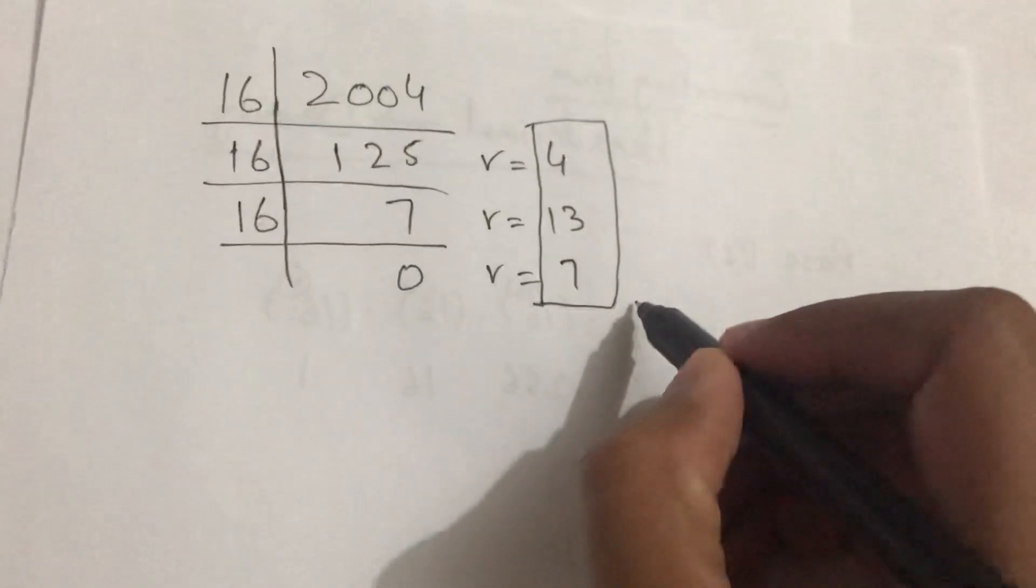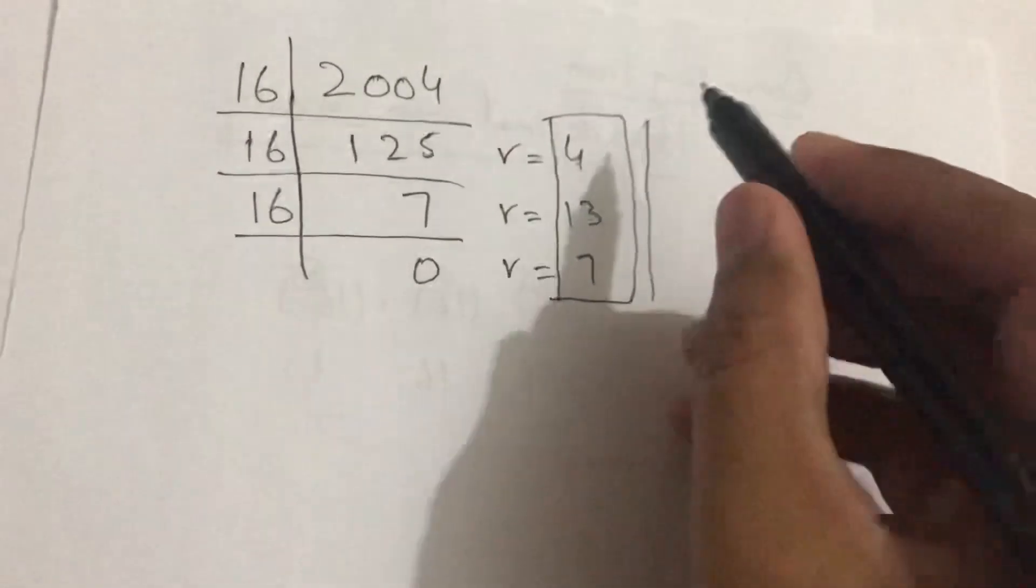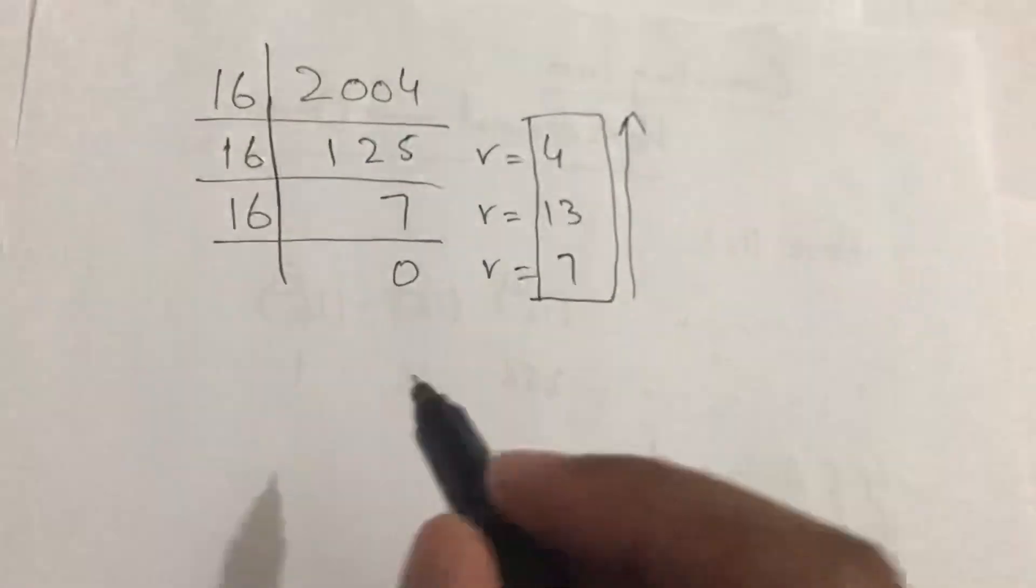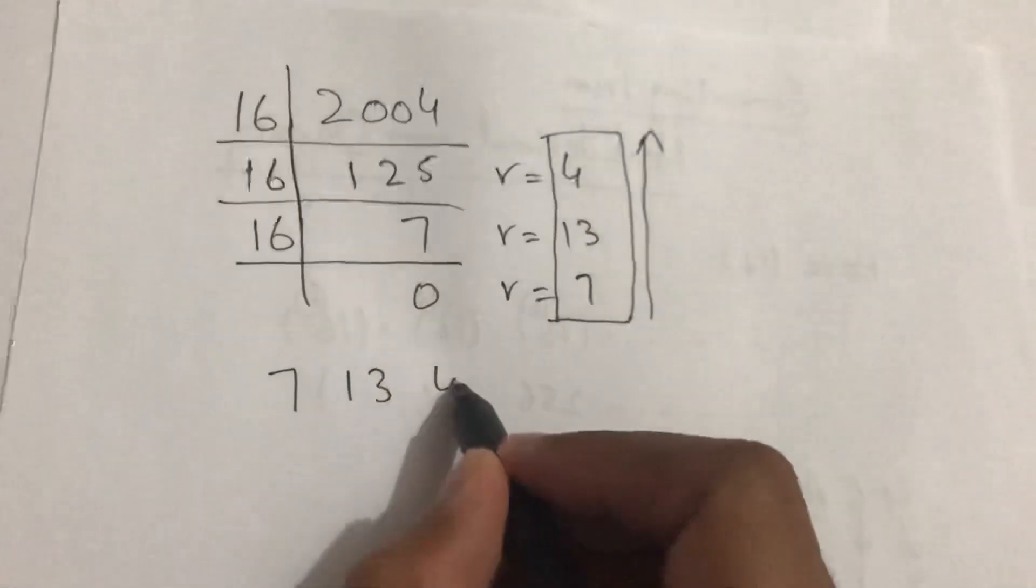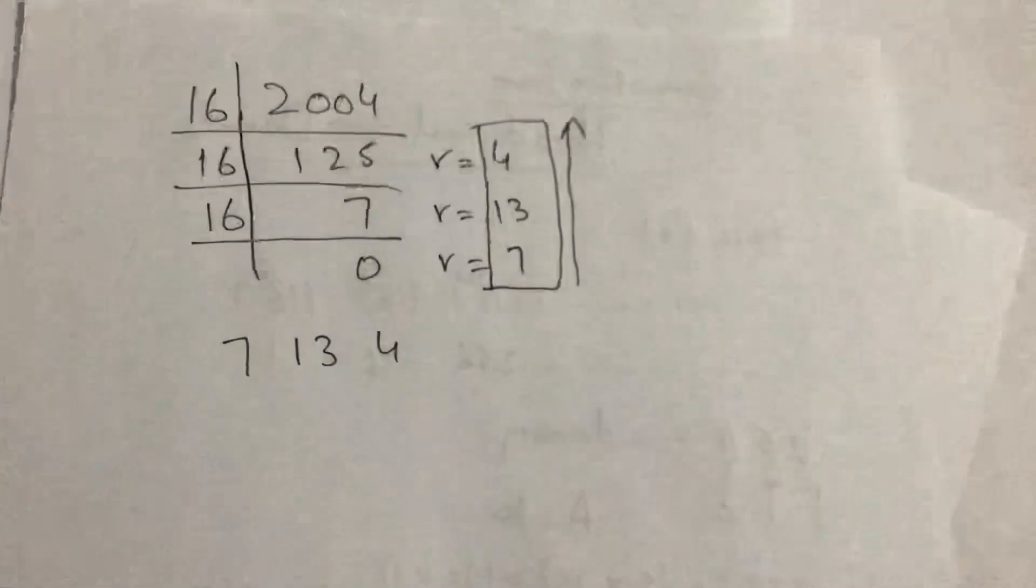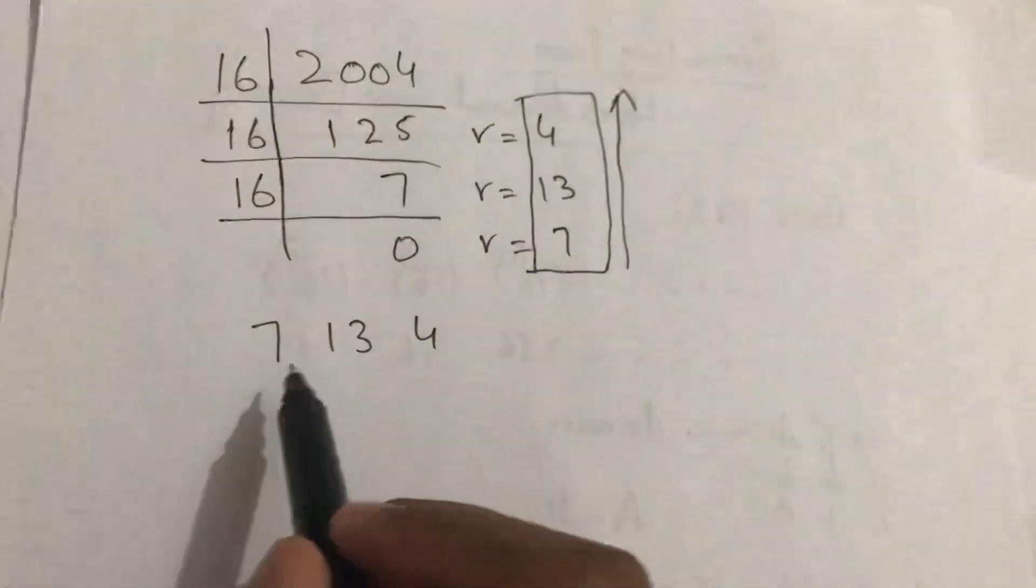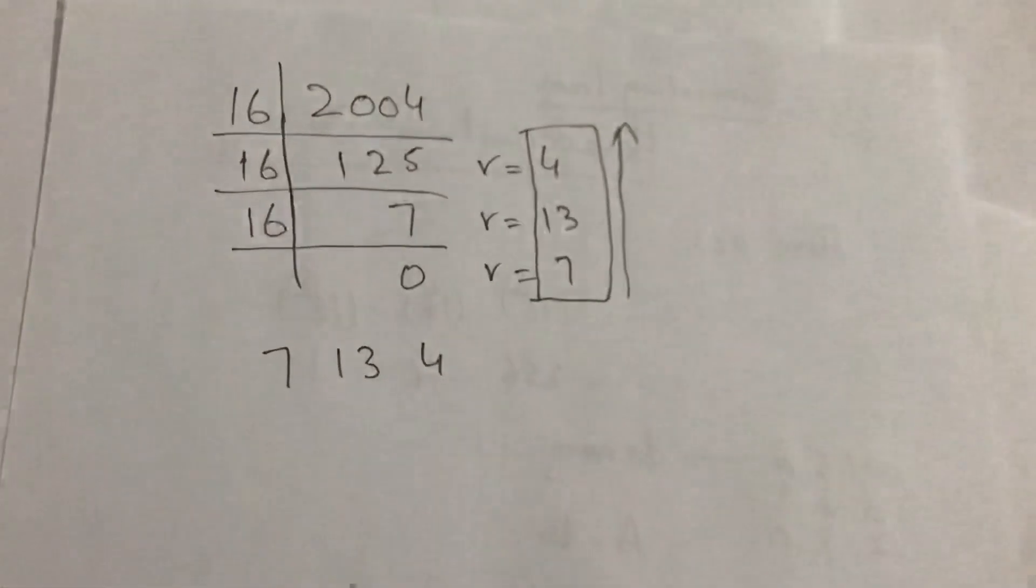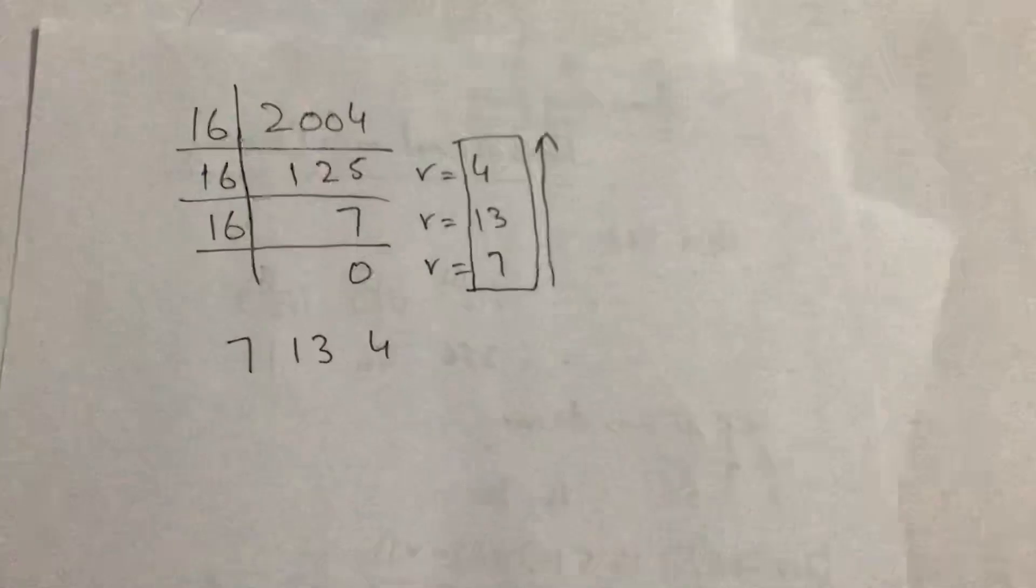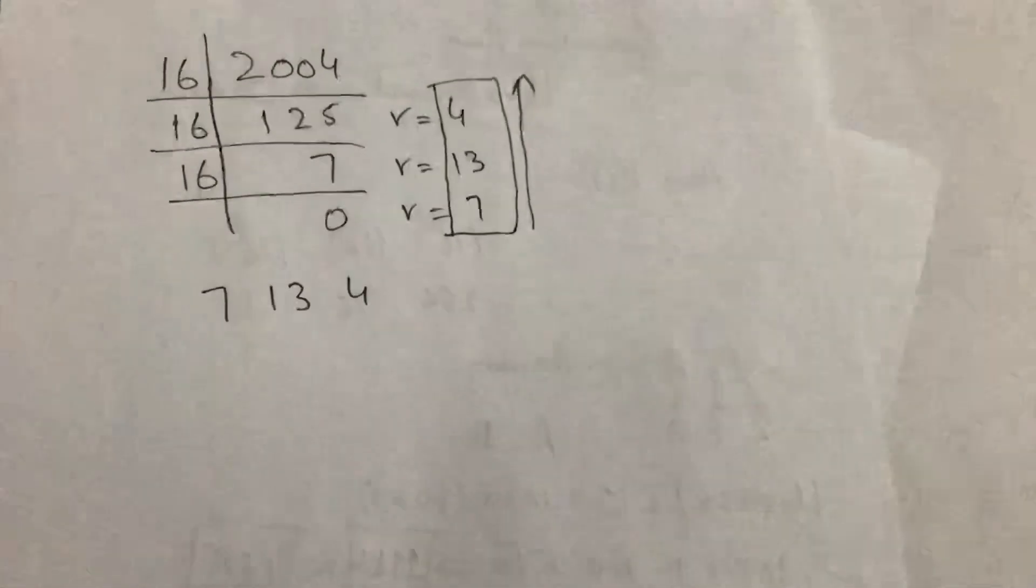From bottom to top we will arrange these values: 7, 13, and 4. 7 is below 10 and 4 is below 10, so in hexadecimal when it equals 10 then it is A, 11 will be B, 12 will be C, and 13 will be D.